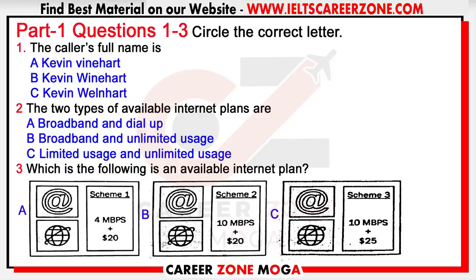The test is in four parts: part one, part two, part three, and part four. Now look at part one. You'll hear a discussion between a customer and a telecaller regarding subscription to internet plans. First you have time to look at questions one to four.